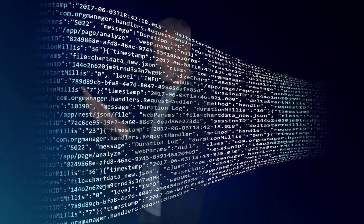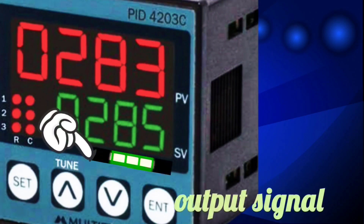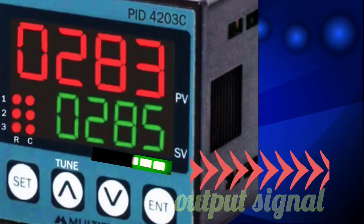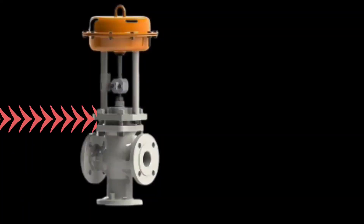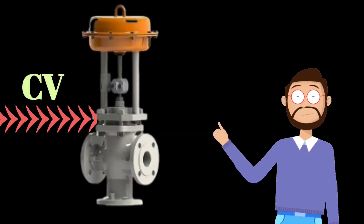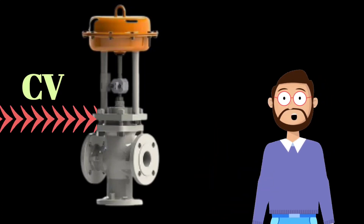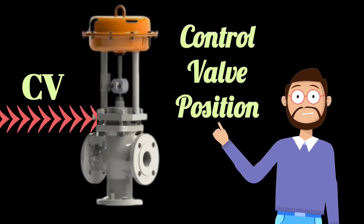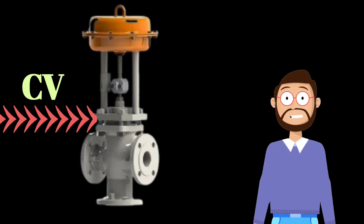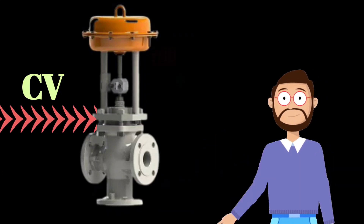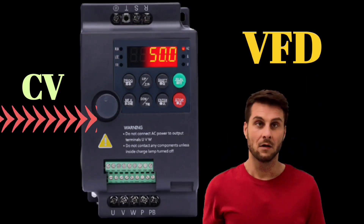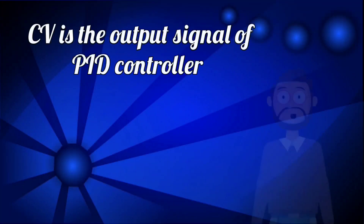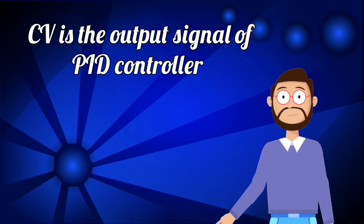To reduce the error, an output signal is sent from the PID controller. This is called the control variable, or CV. Because this output is normally sent to a control valve, some people also call it the position of the control valve. The control variable signal is sent to a control valve or a variable frequency drive, which means VFD. CV is the output signal of the PID controller, which is sent to minimize the error.